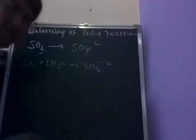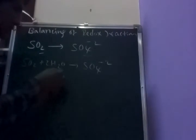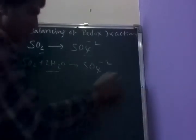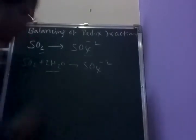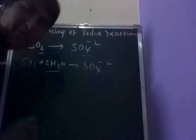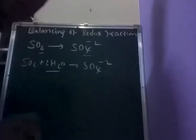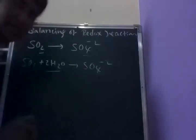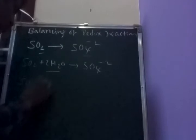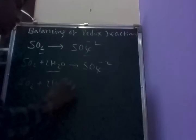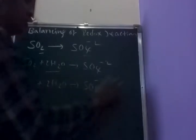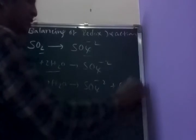Next, balancing of hydrogen atoms. Reactant side has four hydrogens; product side has zero. The difference is four. Because this is acidic medium, hydrogens are balanced by using H⁺ ions. So: SO₂ plus 2H₂O gives rise to SO4²⁻ plus 4H⁺.